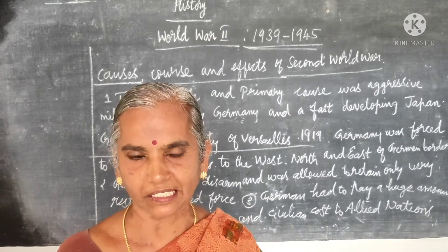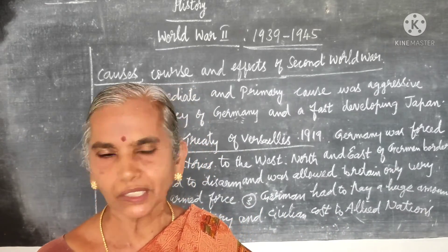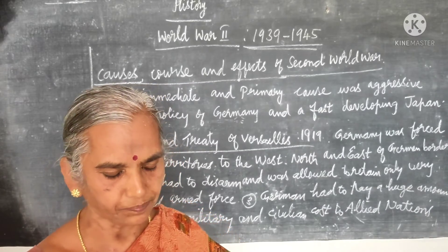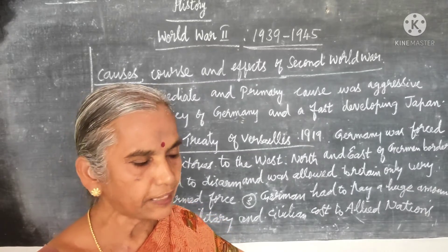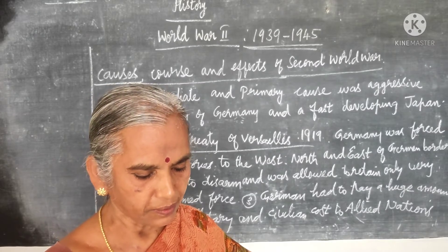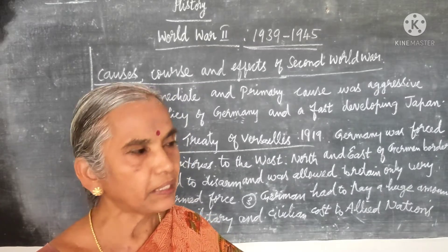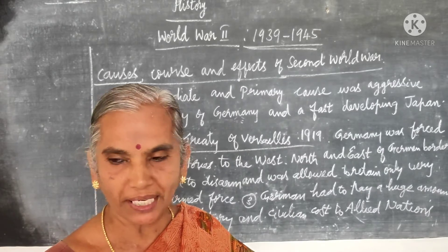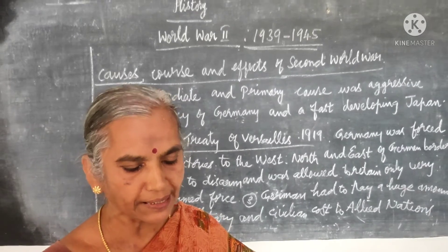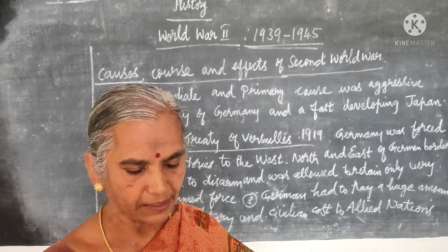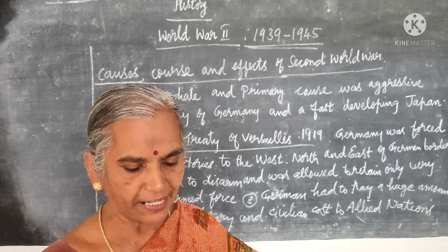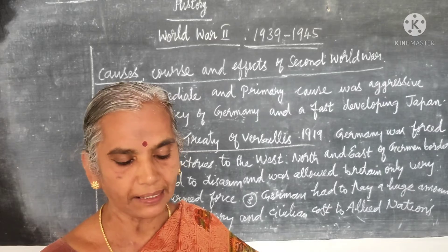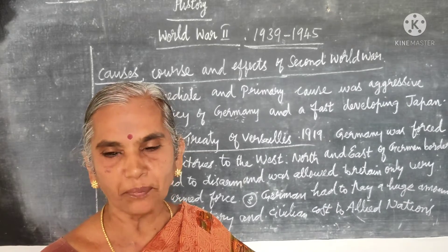Hitler's policy was to first conclude a treaty, and after a short period, violate it. He broke the Munich Pact concluded with Neville Chamberlain and in 1939 invaded Czechoslovakia. Poland was attacked next, and this was the final act which resulted in the declaration of war by Britain and France against Germany.